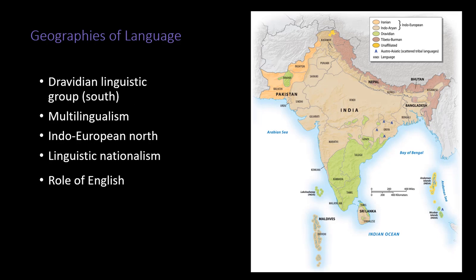Regarding language, there is predominantly a Dravidian linguistic group in this area with a lot of similarities. It's a very multilingual region — not quite the same as Africa, but generally speaking, very multilingual. We see more Indo-European languages in the north. There's linguistic nationalism tied to religious and ethnic groups in some countries. There is also a strong role of English because India and the region were former British colonies.